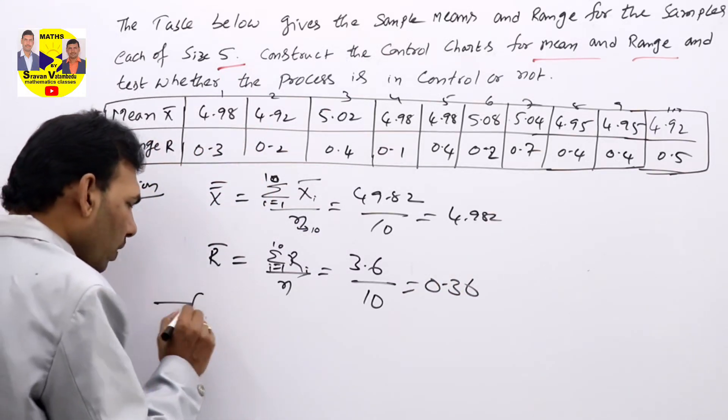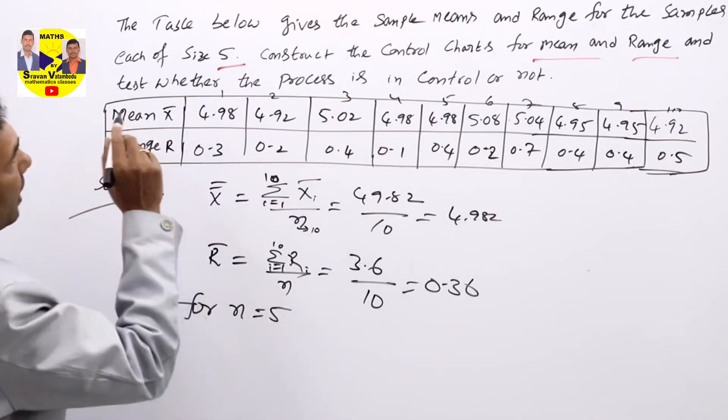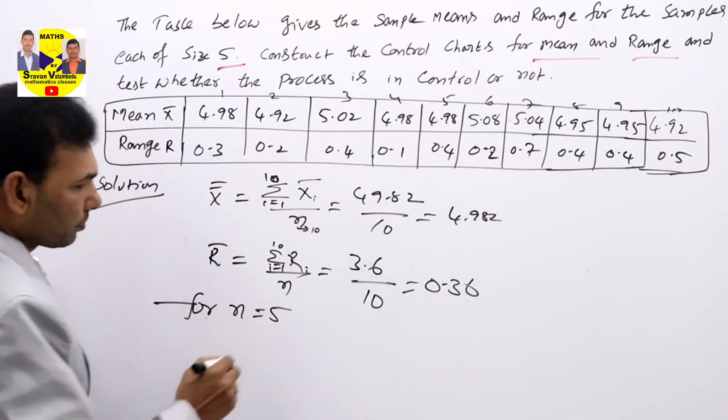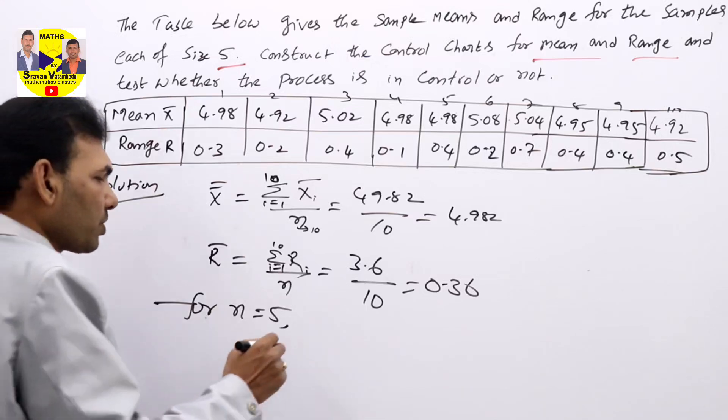Now, for n equal to 5, sample size 5 is given. For n equal to 5, table values related to R bar chart we need to find. For X bar, no need. Those values we need to see.